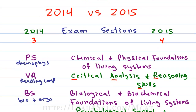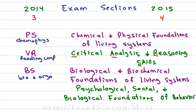The fourth and new section added to the new MCAT is the Psychological, Social, and Biological Foundations of Behavior — or the psych and social section. This section will test you on psychology, sociology, and even a tiny bit of biology.